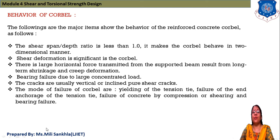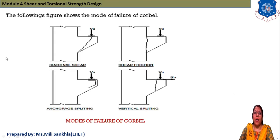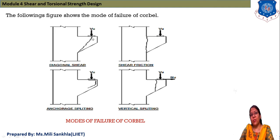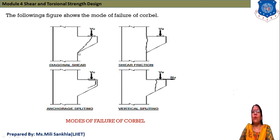From the following figures we understand the failure modes. In the first figure — diagonal shear — a shear force V is applied, and the corbel is provided at an inclined cantilever portion. Due to this force it deforms, and this failure is known as diagonal shear.